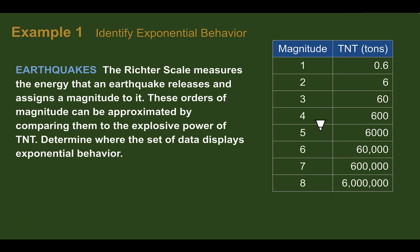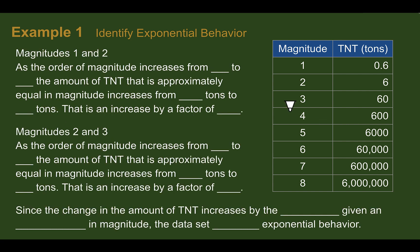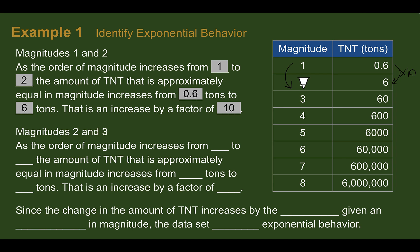Example one: Identify exponential behavior. Our real context is earthquakes. The Richter scale measures the energy that an earthquake releases and assigns a magnitude to it. These orders of magnitude can be approximated by comparing them to the explosive power of TNT. Determine where the set of data displays exponential behavior. From magnitude one to two, the amount of TNT equivalent went from 0.6 to six — it increased by a factor of 10, so we multiplied by 10 to go up one magnitude.